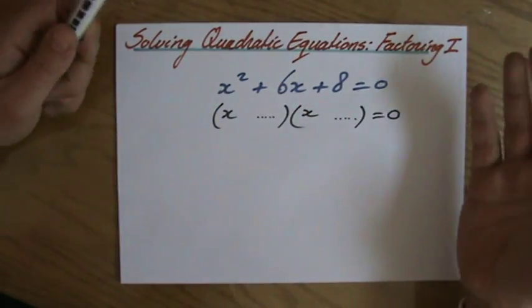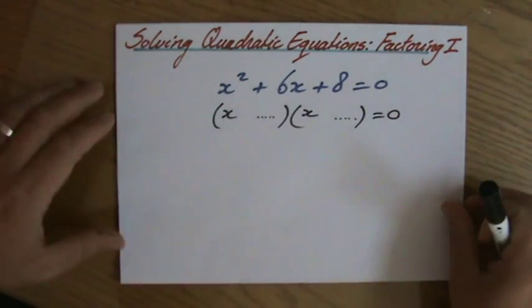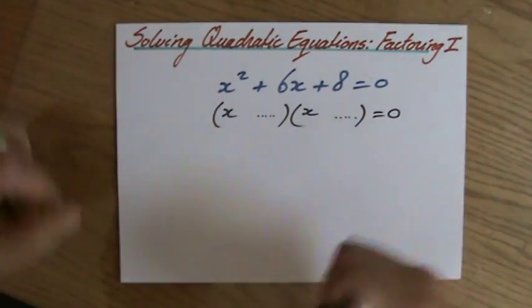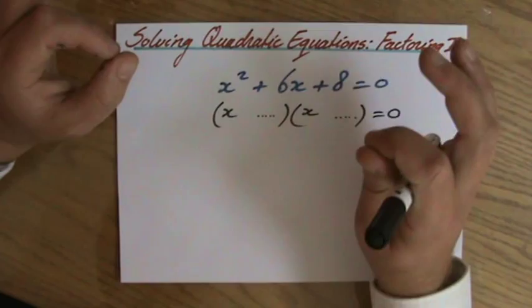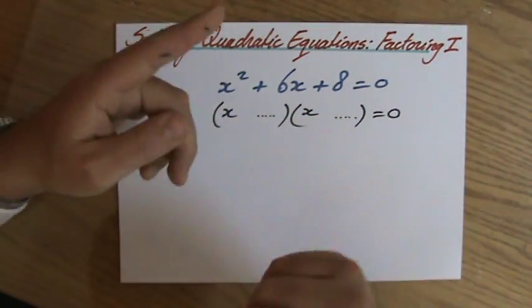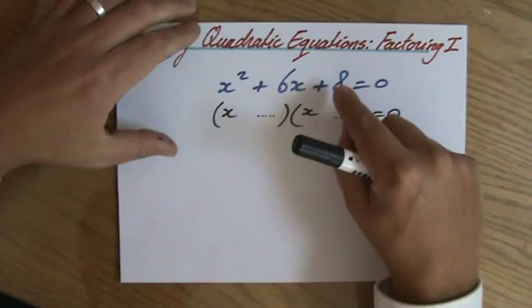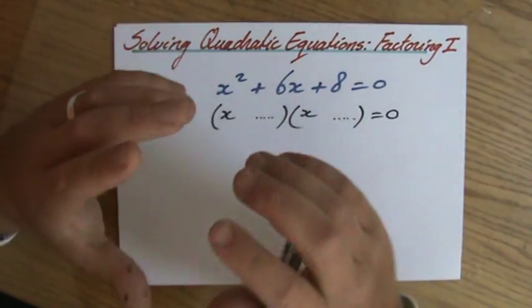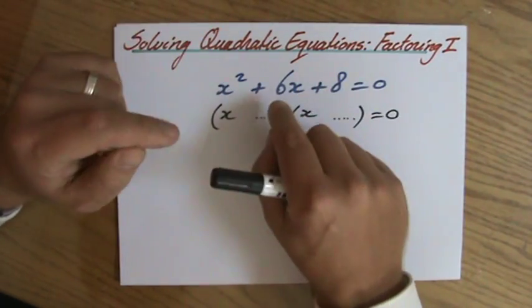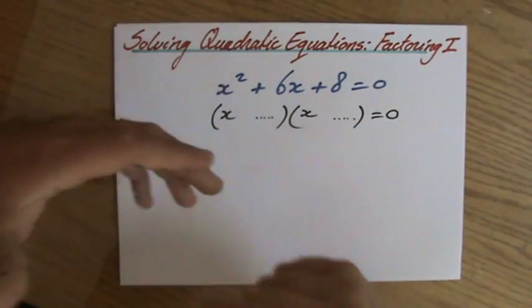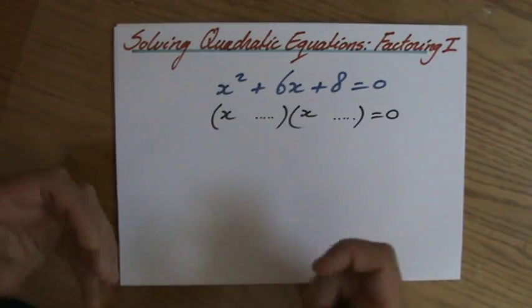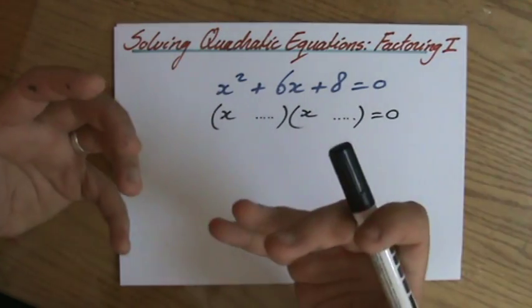But I have to put a number there and I have to put a number there. But which two numbers? That's a puzzle. So you really should try to enjoy that. It's a puzzle, which two numbers? Well, the riddle is, those two numbers, if you multiply them, should give you 8. And if you add those two numbers, you should get 6.